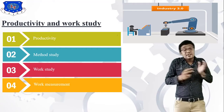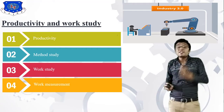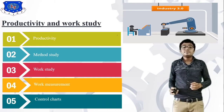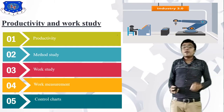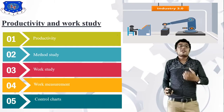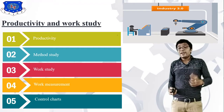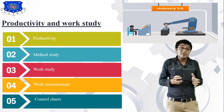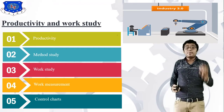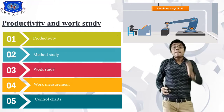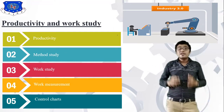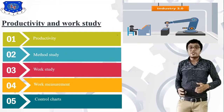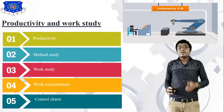There are lathe machines and CNC machines — I have attached a CNC machine video. The fifth topic is the control chart. In this chapter we will study productivity, method study, work study, work measurement, and control charts.